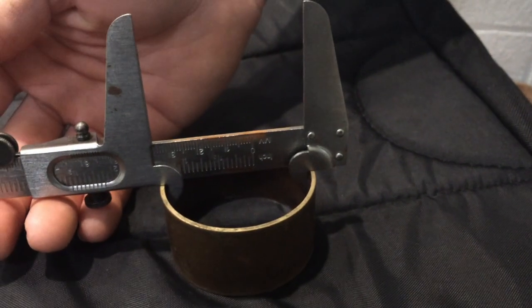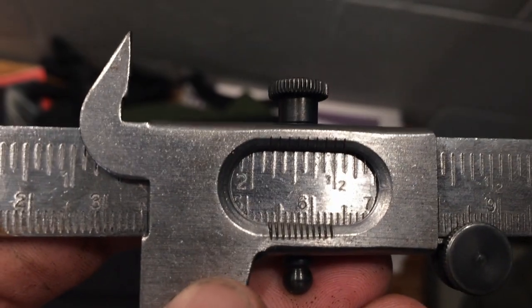Use a caliper or ruler to measure the inside diameter and the height of the ring.